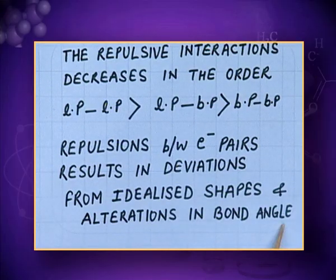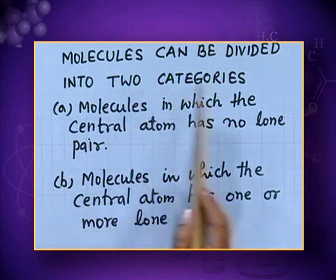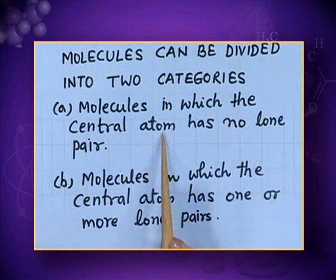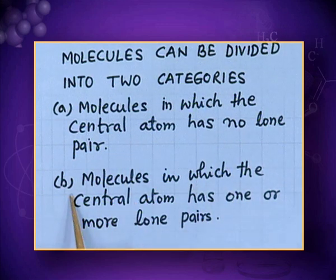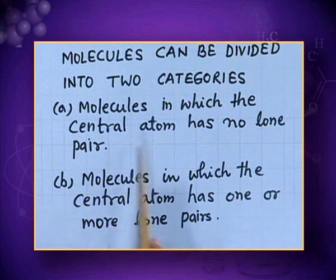Molecules can be divided into two categories: molecules in which the central atom has no lone pair, and molecules in which the central atom has one or more lone pairs. The central atom with no lone pair will have the ideal shape. But in molecules where lone pairs are present, there will be lone pair–lone pair or lone pair–bond pair repulsions, causing distortions in shape and a change in bond angle.